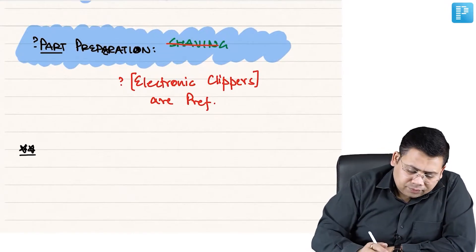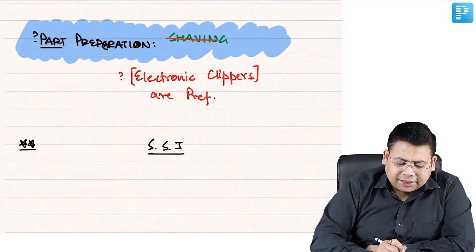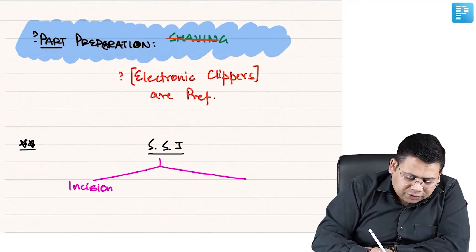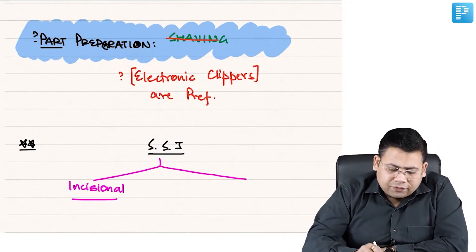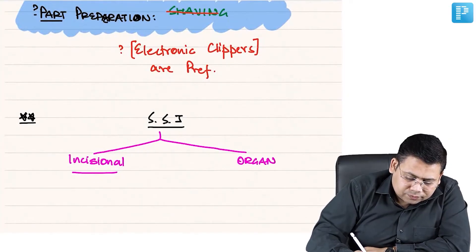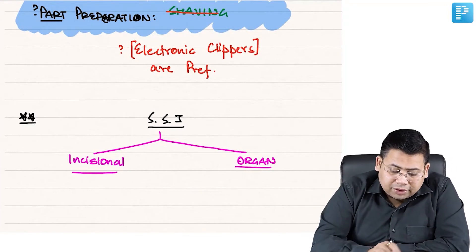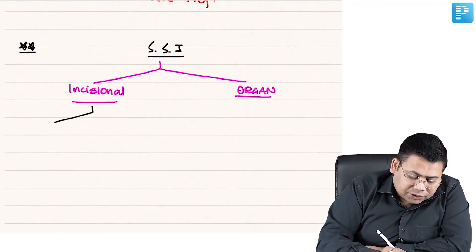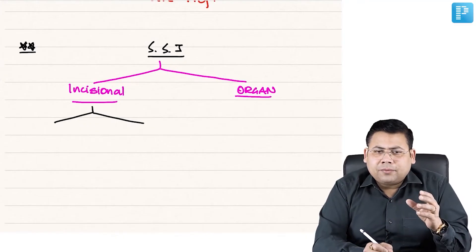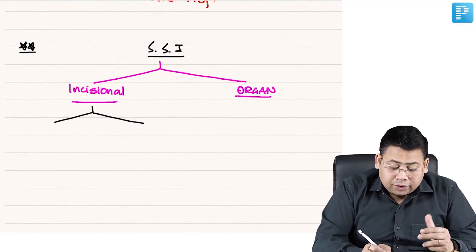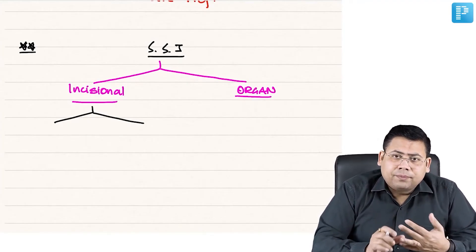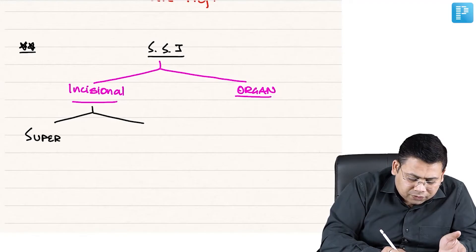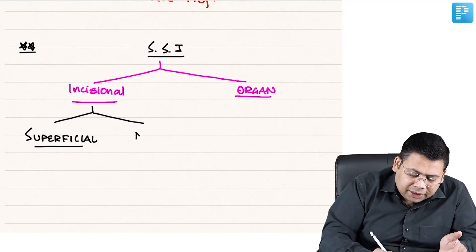Now let us classify SSI. Surgical site infection can be incisional — along the incision — or it can involve an organ. If incisional, it is further divided into superficial incisional SSI, which involves skin and subcutaneous tissue, and deep incisional SSI, which involves muscle, fascia, and peritoneum.